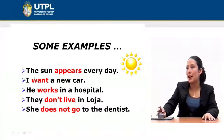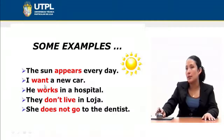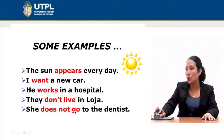Let's see some examples. The first example is the simple present used as a fact: 'The sun appears every day.' This means every day you can see the sun in the sky — it's a fact, something that cannot be changed. An S is used on the verb because 'it' (the sun) is third person. 'I want a new car' is a desire. 'He works in a hospital.' 'They don't live in Loja' or 'She does not go to the dentist' — here you need to use 'does' plus 'not' plus the base form of the verb plus a complement.